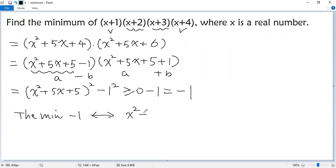So we get x squared plus 5x plus 5 equals 0. So we can use quadratic formula to figure out that.